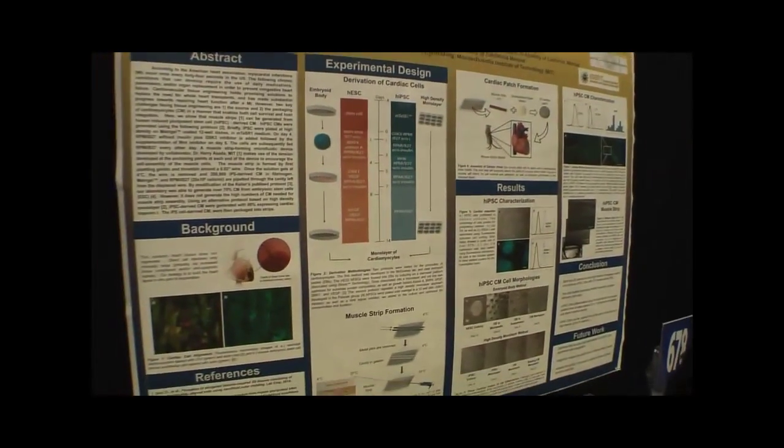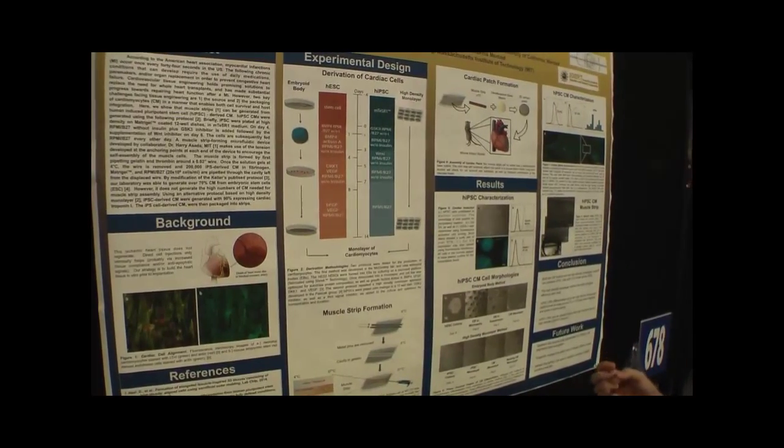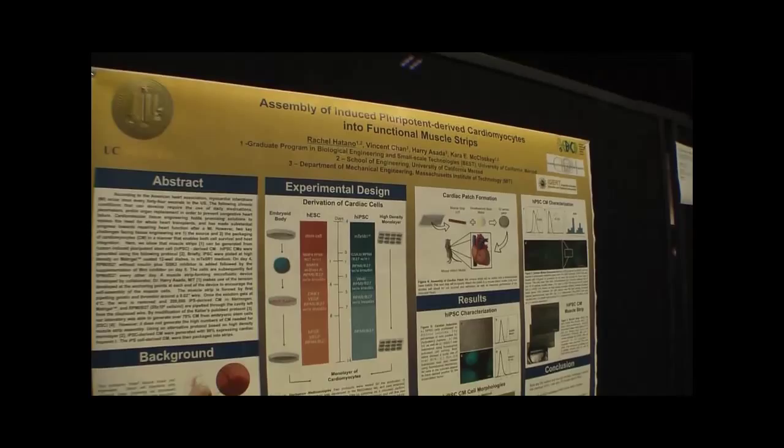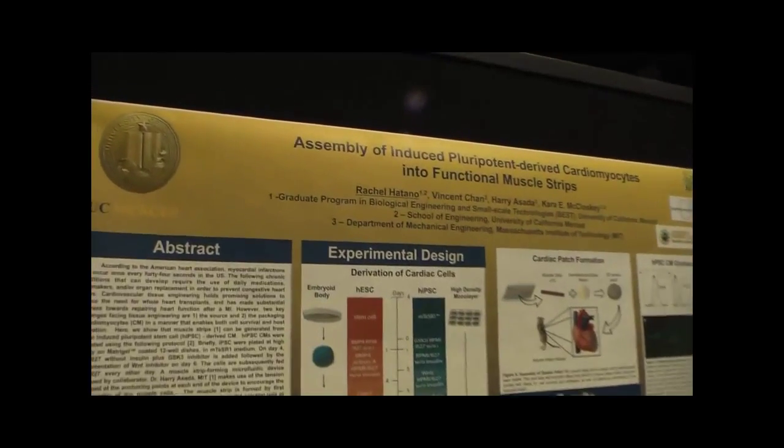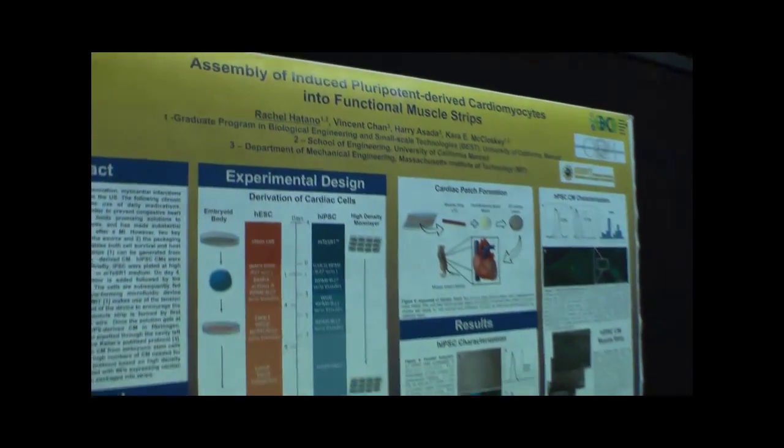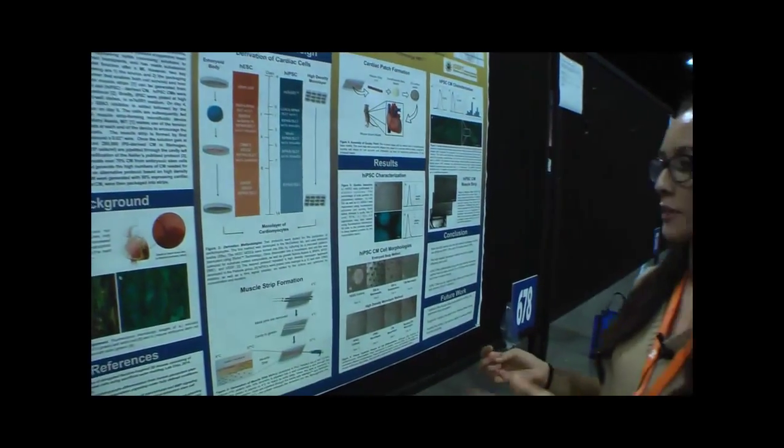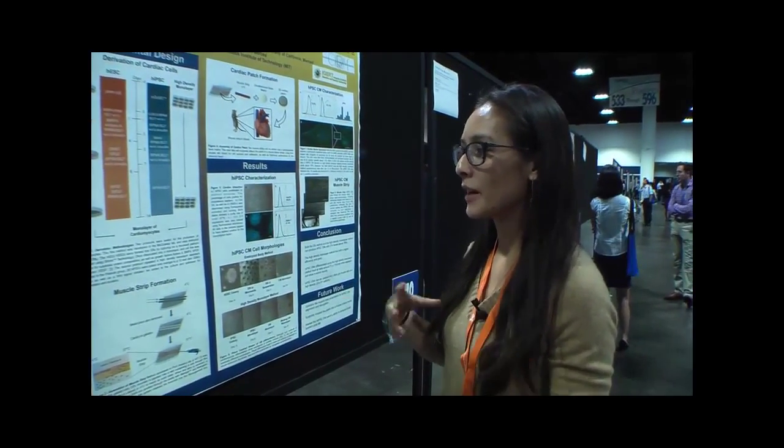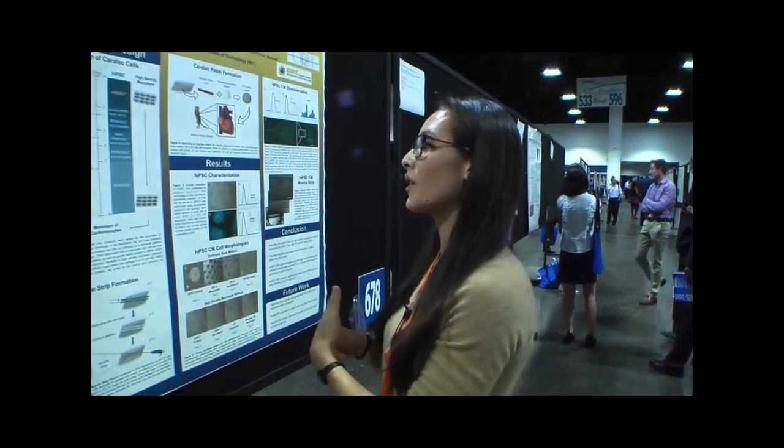The first was a method optimized in our lab using growth factors to derive the cardiomyocytes. We plate them onto a laminin-fibronectin blend. This protocol gets up to 80% cells that are positive for the cardiac specific marker cardiac troponin I, but the efficiency of cells that became cardiomyocytes wasn't as high as another protocol I tried, which